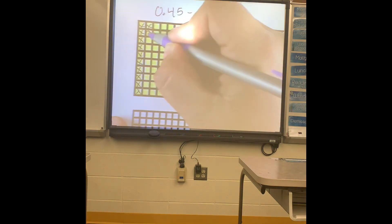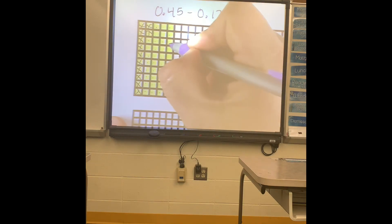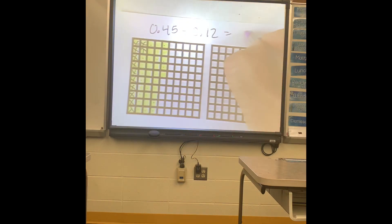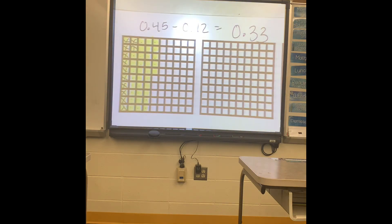All right. Now let's count how many boxes are left. So these are gone. Think of those as totally gone. So I have one, two, three, four, five, six, seven, eight, nine, ten, eleven, twelve, thirteen, fourteen, fifteen, sixteen, seventeen, eighteen, nineteen, twenty, twenty-one, twenty-two, twenty-three, twenty-four, twenty-five, twenty-six, twenty-seven, twenty-eight, twenty-nine, thirty, thirty-one, thirty-two, thirty-three. So that means my answer is 33 hundredths.